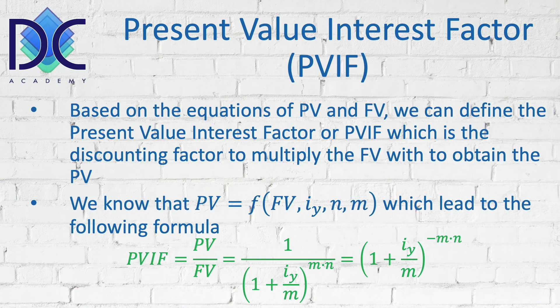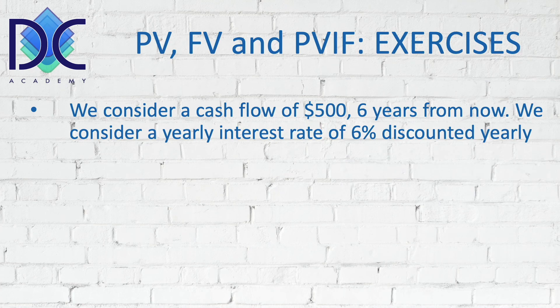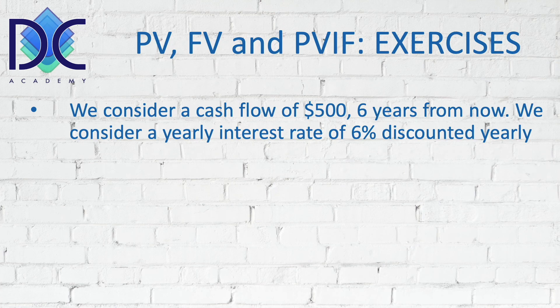Now let's have a look at a short exercise using these numbers. We consider a cash flow of $500 six years from now and an interest rate of 6%. To make the exercise simple, we say M is equal to 1, meaning that we are discounting yearly. We will talk later about how to select that interest rate — for fixed bank interest it's straightforward, but for projects there is a special way to select it.